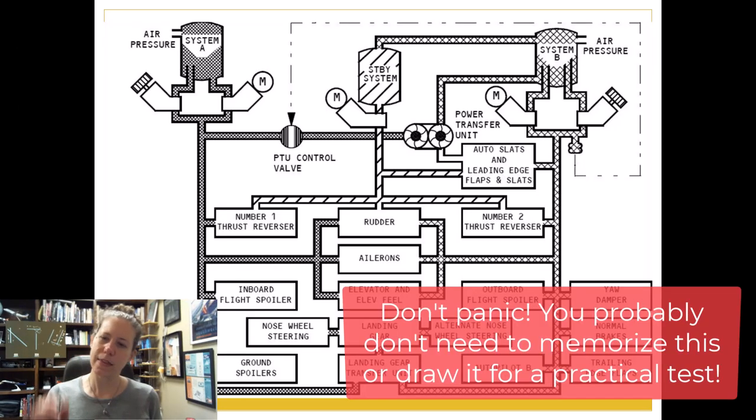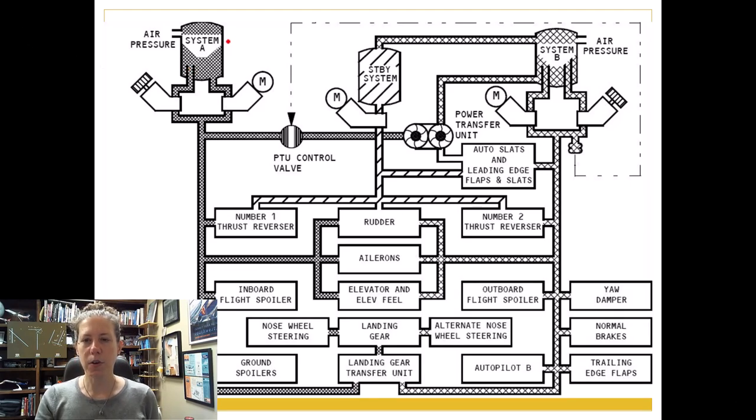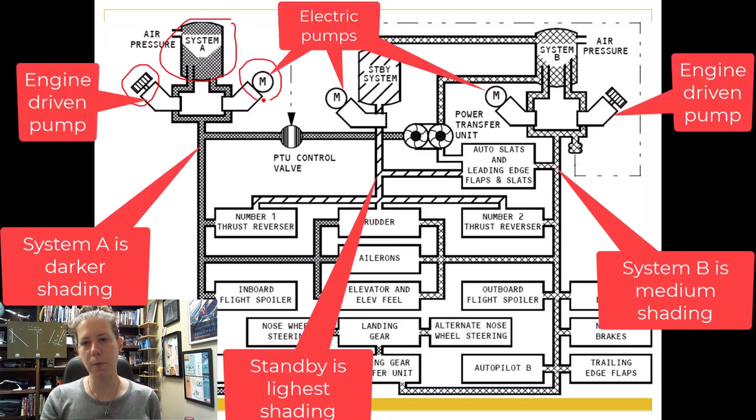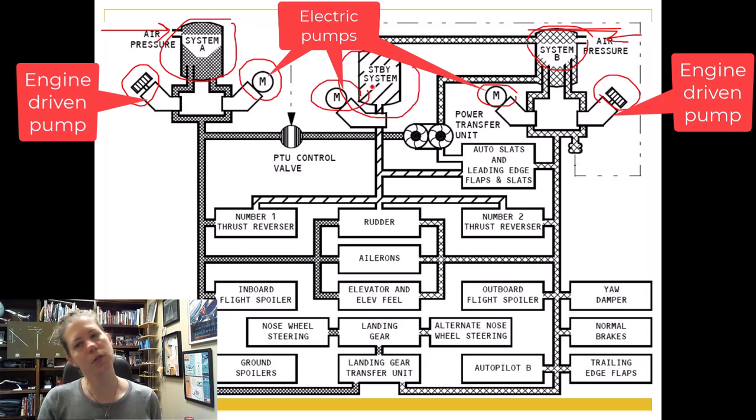All right. So let's take a look quick at this diagram, which does seem to be rather complicated when we first look at it. But that means I just pull out my pen and draw on it. So we've got System A. Over here, we have got a pump that's attached to the engine and then M for a motor. So we have a mechanical pump and then a motor-driven pump. And then on System B, we also have that motor-driven pump and the actual mechanically driven pump. You notice each has air pressure coming in. So that pressurizes our system. And then we've got our standby pressure and standby system here with the electric motor-driven pump.